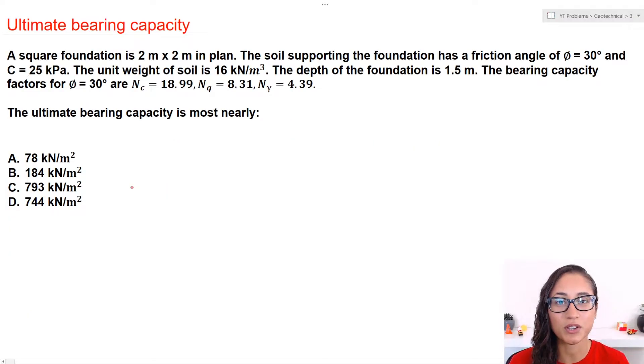Okay guys, so let's read the question together. We have a square foundation that is 2 meters by 2 meters in plan. The soil supporting the foundation has a friction angle of 30 degrees and a cohesion of 25 kilopascals. The unit weight of soil is 16 kilonewtons per cubic meter. The depth of the foundation is 1.5 meters and the bearing capacity factors are provided to us. We need to calculate the ultimate bearing capacity.